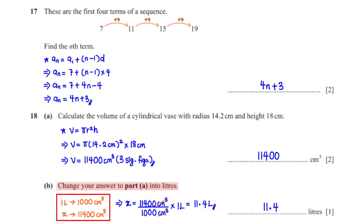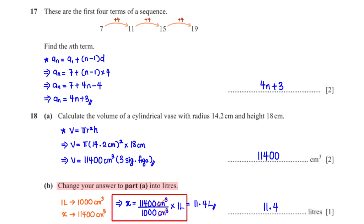Convert the answer to liters. We know 1 liter = 1000 cm³. We want the equivalent in liters for 11,400 cm³, calling it x. Cross-multiplying and solving gives 11.4 liters.